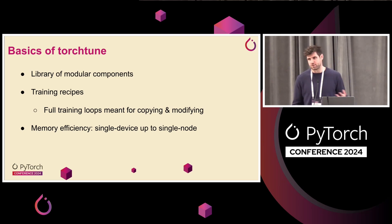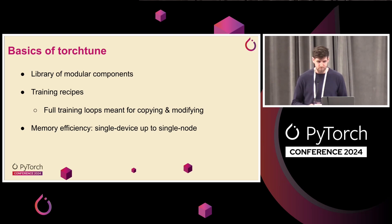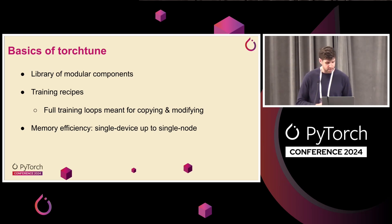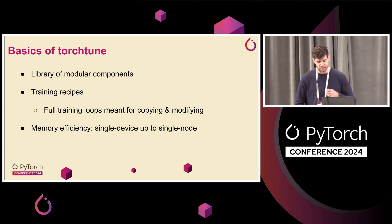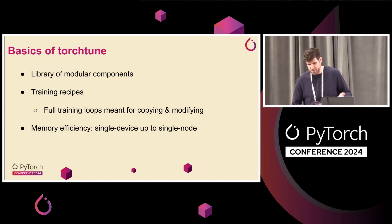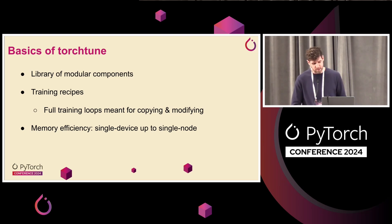So people maybe heard about TorchTune in the keynote. What is it? There are kind of two pieces. There's a library of modular components — pieces of a model architecture, datasets, data abstractions, training utilities, things like that. And then we provide training recipes, which are supposed to be simple, hackable scripts that you can easily copy and modify right from the command line. The goal is to increase the speed of experimentation — make it really easy to take some model, hack it a bit, change something about the training loop, maybe change your config, and try out some new technique. We also care a lot about memory efficiency. A lot of what I'll go through today is single device, but we support training on up to a single node as well.